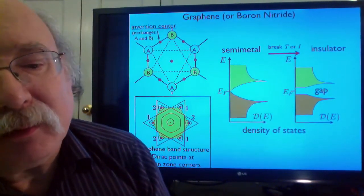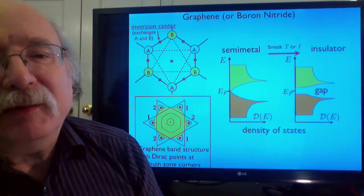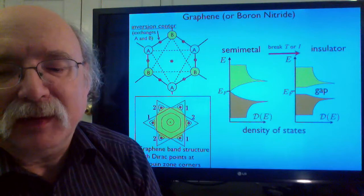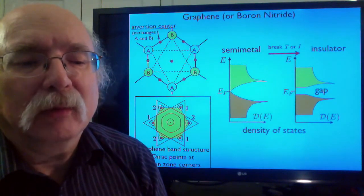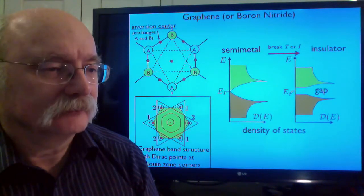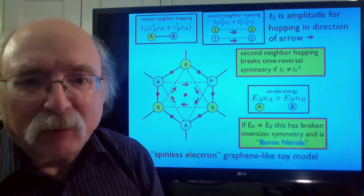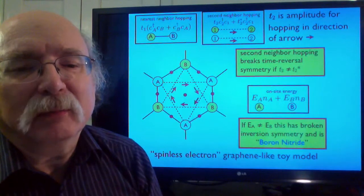It's broken if the A and the B sites are occupied by different atoms as they are in the gap semiconductor boron nitride. What I wanted to do was to break time reversal symmetry without breaking any of the spatial symmetries of the model.